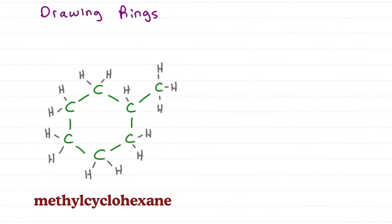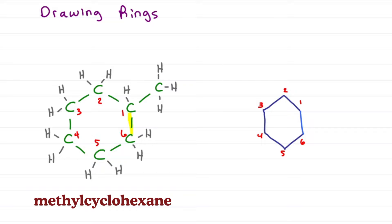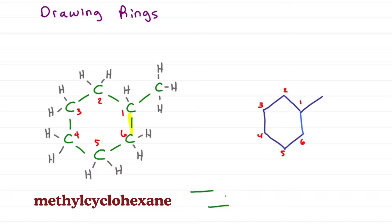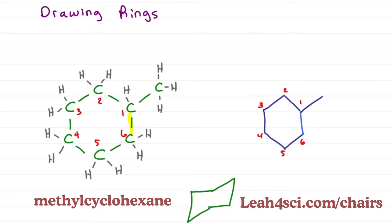The process is the same for rings. Take methylcyclohexane — scary mess, right? We number the ring as the parent chain, then draw the lines from one through six. Don't forget the bond between carbon six and carbon one to close the ring, and the methyl group on carbon one. Isn't this so much less scary? Cyclohexane can also be drawn as a chair conformation, which is covered separately.